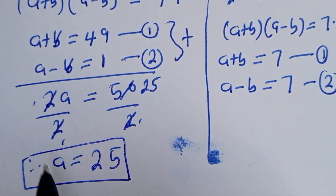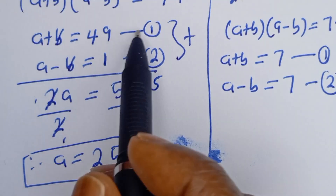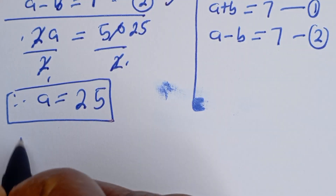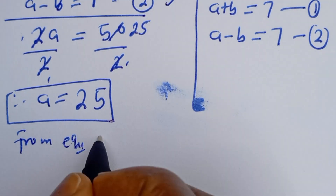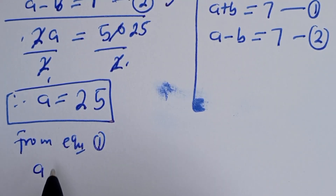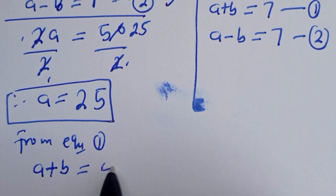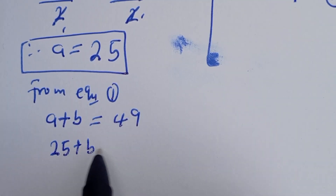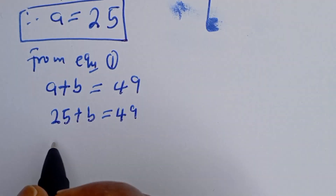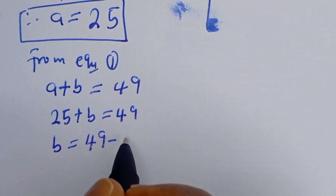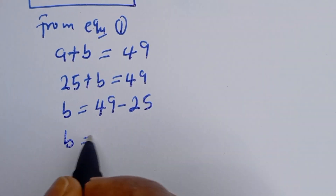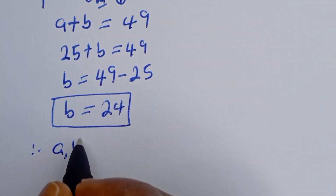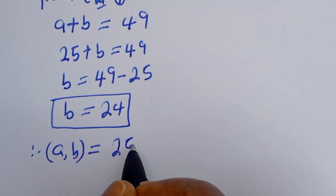From the first case, now we've gotten the value of A. Let's solve for B using equation 1. From equation 1, A plus B is equal to 49. When A is equal to 25, we have 25 plus B equals 49. Then B is equal to 49 minus 25, so B is equal to 24. Therefore, A comma B will be equal to 25 comma 24.